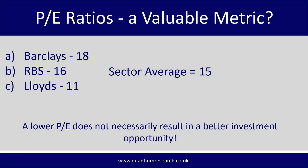Assuming every other factor is held constant and all three companies make the same revenue and likely profit — why is Barclays more expensive than RBS, and why is RBS more expensive than Lloyds? If the sector averages 15, in the long run they should all go to a P/E of 15, so Lloyds would be something you'd buy, Barclays you'd short, and RBS you'd probably short or remain neutral. But that's unrealistic — a lot of people assume shares will rise or fall just because they look cheap, but a lot of the risk is already priced in.